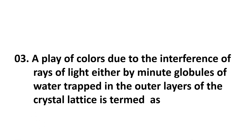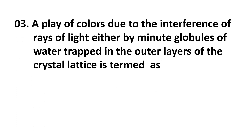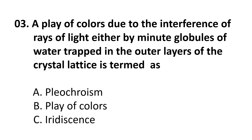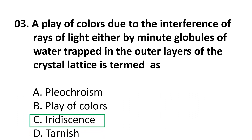Question 3: A play of colors due to interference of rays of light by minute globules of water trapped in the outer layers of the crystal lattice is termed as — A. pleochromatic, B. play of color, C. iridescence, D. tarnish. The correct answer is C, iridescence. Iridescence is when a mineral exhibits different colors due to the interference of light.